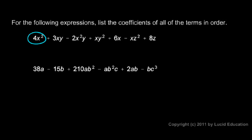For the first term, the coefficient is 4. The next coefficient is 3. Now be careful — the negative sign is part of this term, so for negative 2·x²·y, the coefficient is negative 2. For the next term, x·y², there's no number, so we understand it to be 1 times x·y², and the coefficient is 1.